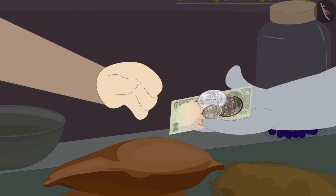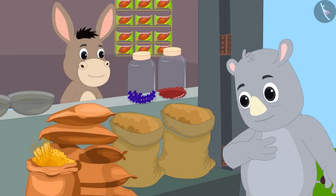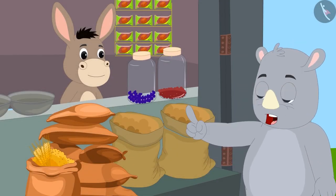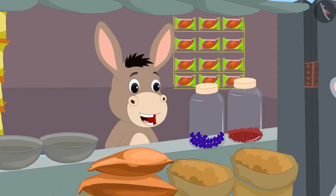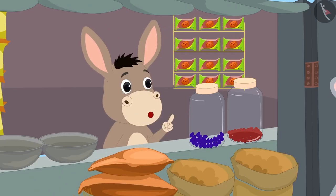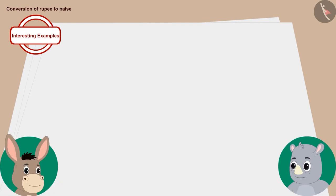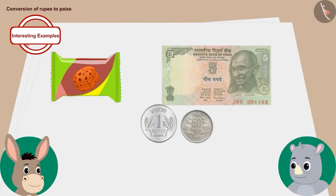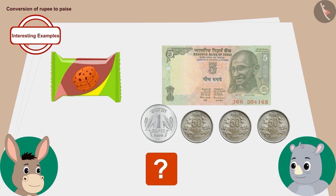Gaggu gave the price of chickpeas to Bola and bought 1 kg of chickpeas. Now, Gaggu asked Bola the price of a packet of biscuits. Bola told Gaggu the price of the biscuits. If Gaggu gave Bola these notes and coins for biscuits, can you find out what the cost of the packet of biscuits is?